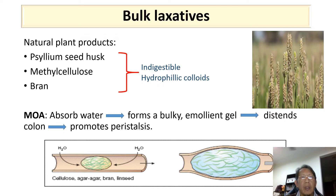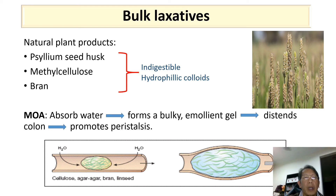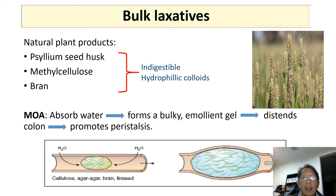Bulk-forming laxatives include psyllium seed husk, methylcellulose, and bran. These drugs are indigestible hydrophilic colloids. Bulk-forming laxatives are not digested but absorb water and form a bulky emollient gel. This bulky stool will distend the colon and promote peristalsis. The bowel is then stimulated by the presence of this bulky mass.